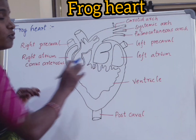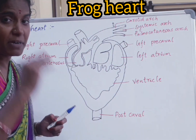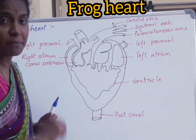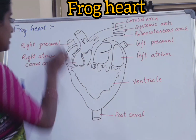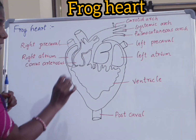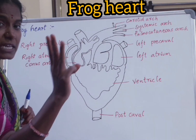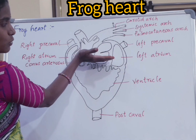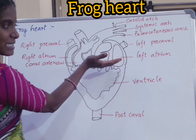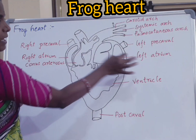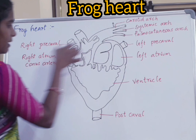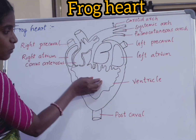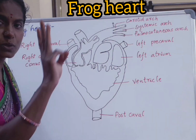A human being's heart is a four-chambered heart, but the heart of a frog consists of three chambers. The two upper chambers are called atria — left atria on the left side and right atria on the right side — and one lower chamber called the ventricle.